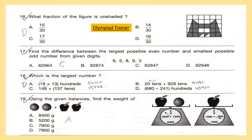Question 18: Which is the largest number? Option A: 19 into 13 hundreds. Option B: 20 tens plus 928 tens. Option C: 148 plus 137 tens. Option D: 680 minus 241 hundreds.